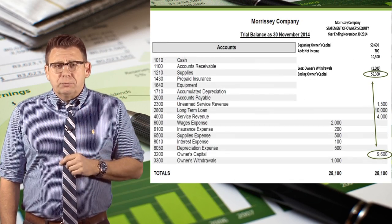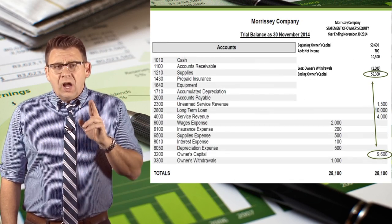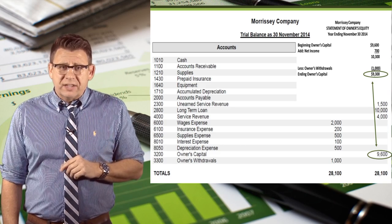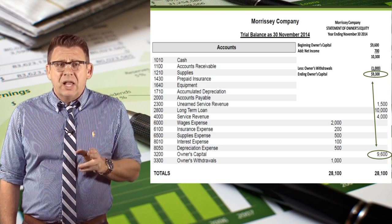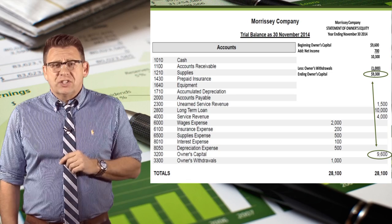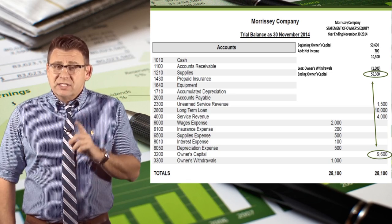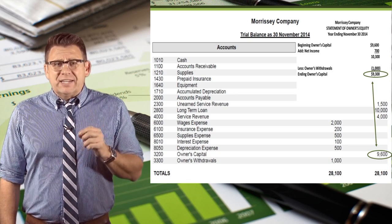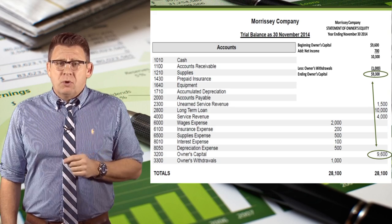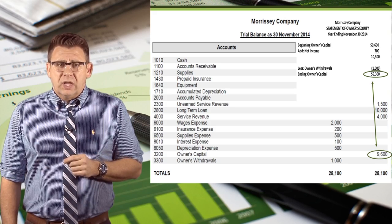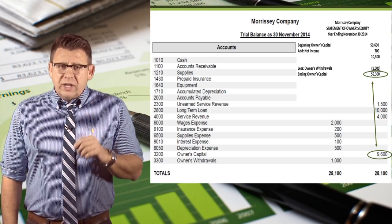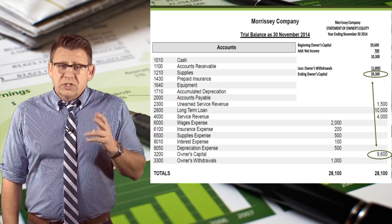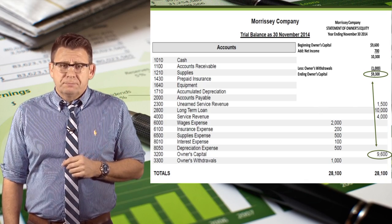One final note: all of the accounts and amounts reported to our investors and creditors are the same as the adjusted trial balance, except one. Owner's capital has a different account balance than what we reported. This will get corrected in the next step in the accounting cycle, which is closing journal entries.